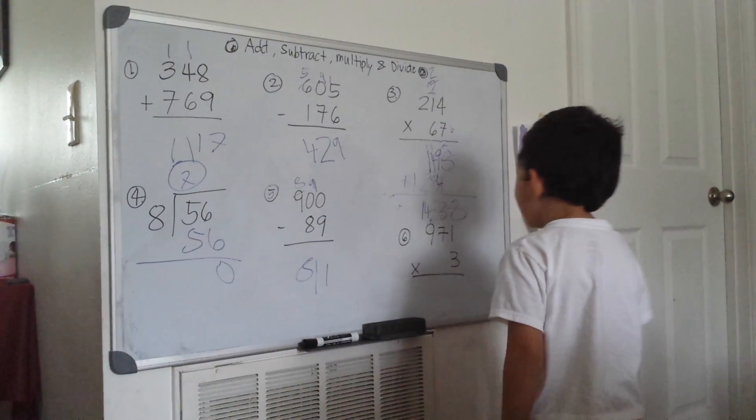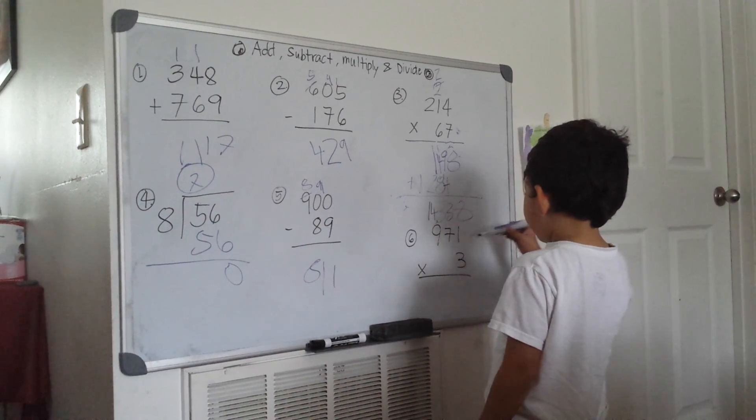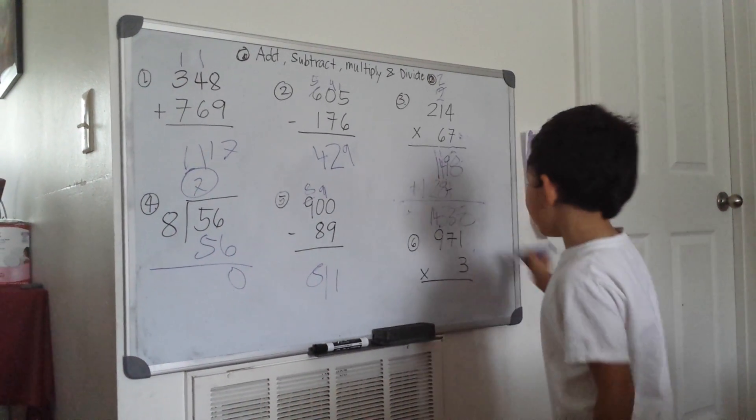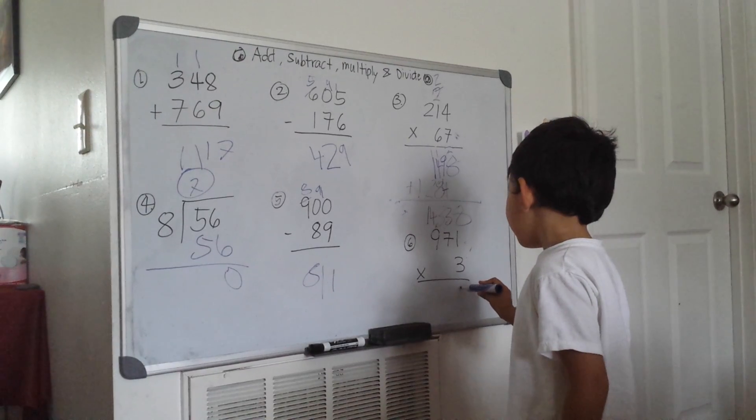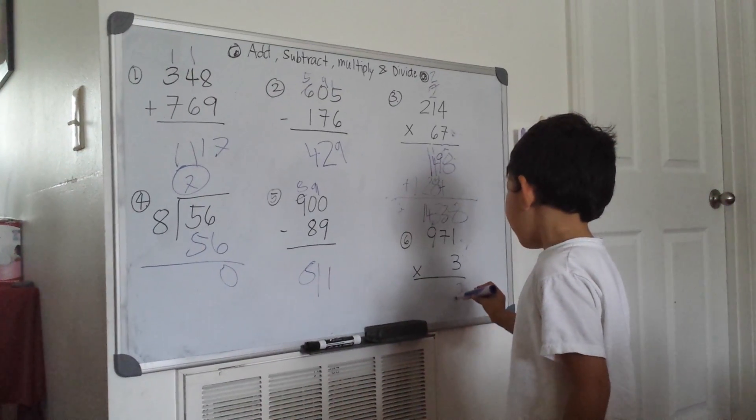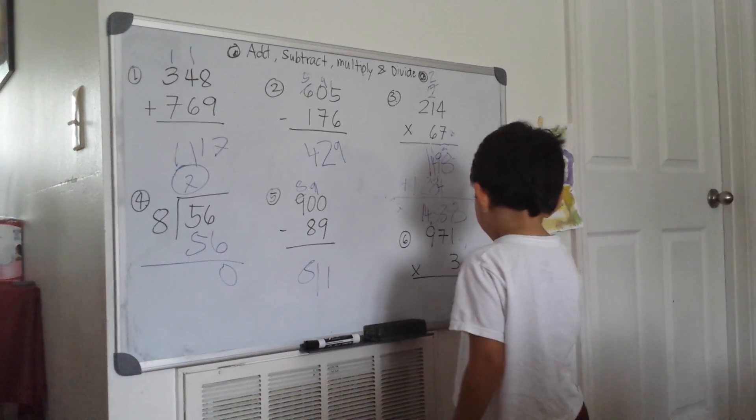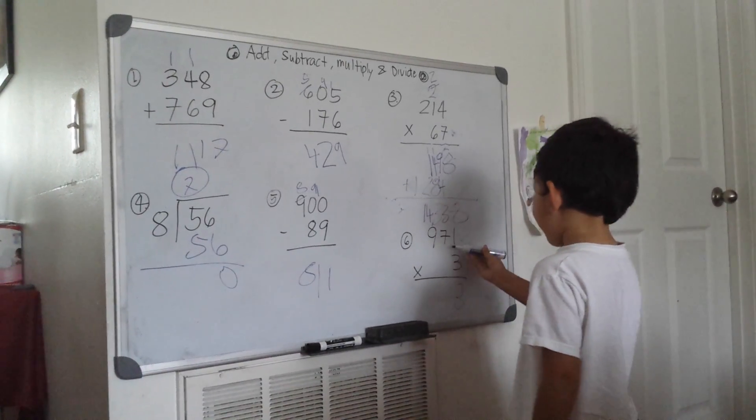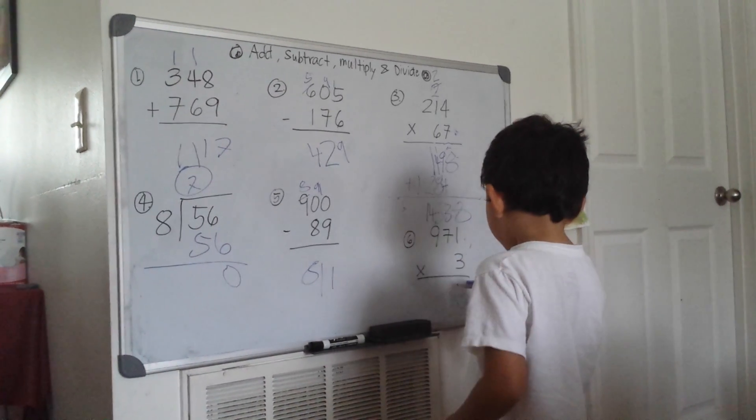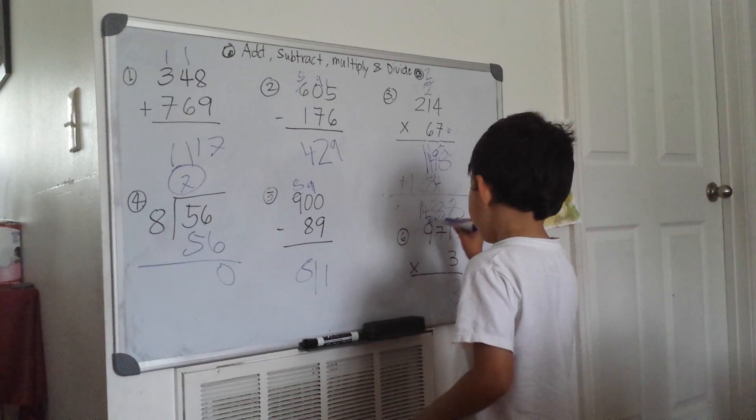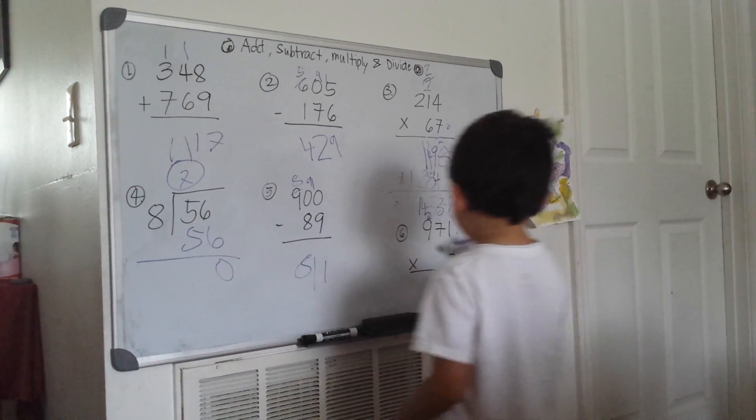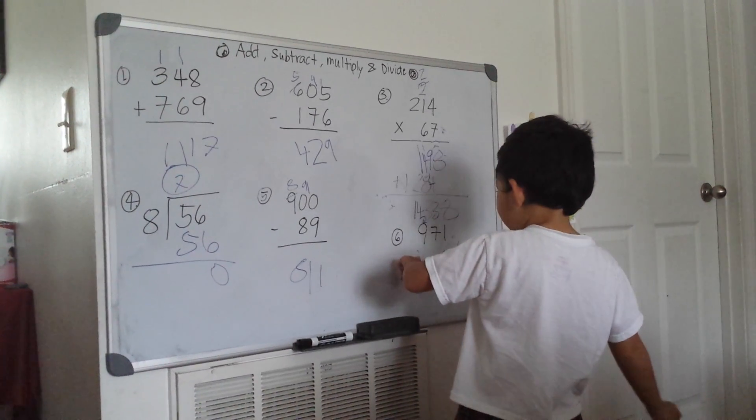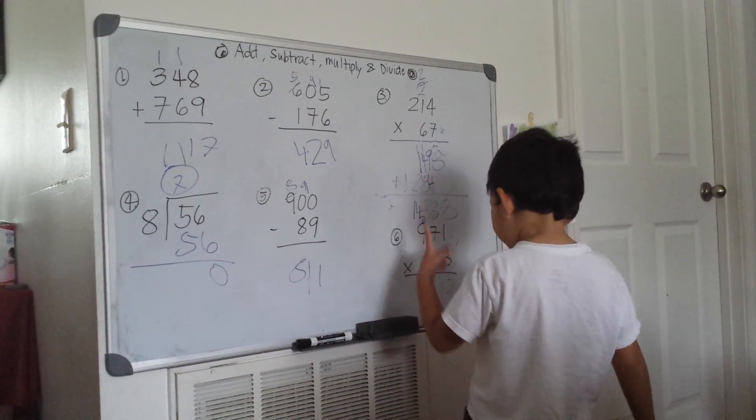971 times 3. 3 times 1 is 3. 3 times 7 is 21, carry the 2. 3 times 9 is 27, plus 2 is 29. The answer is 2,913.